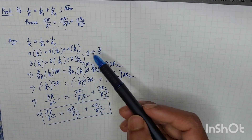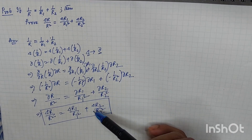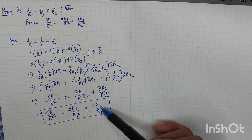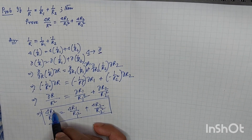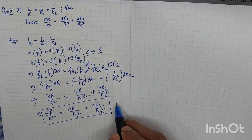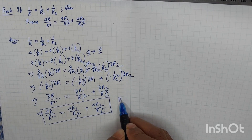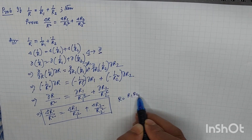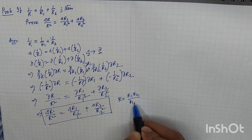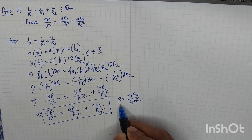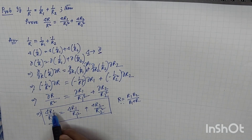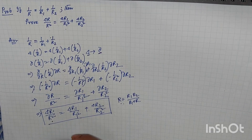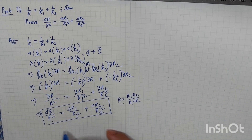So this is the method to prove ΔR/R² = ΔR1/R1² + ΔR2/R2². First find ΔR using the formula R = (R1·R2)/(R1 + R2), substitute that value here, and you will easily get the equation for ΔR. Thank you.